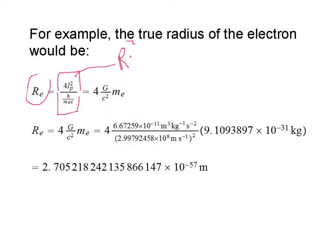That's h-bar divided by the mass of the electron times the speed of light. And we get that the radius of the electron is equal to 4 times the gravitational constant divided by the speed of light squared, times the mass of the electron.